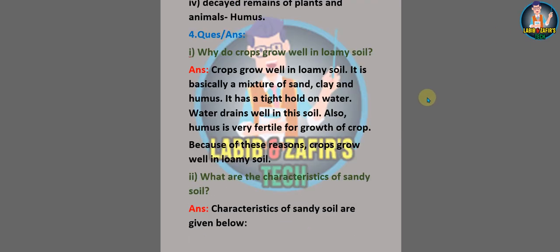Now we are in question answers that were given in the book, and here are the answers I made myself. Number one question: why do crops grow well in loamy soil? Answer: crops grow well in loamy soil because it is basically a mixture of sand, clay, and humus. It has a tight hold on water, water drains well in this soil, and humus is very fertile for growth.